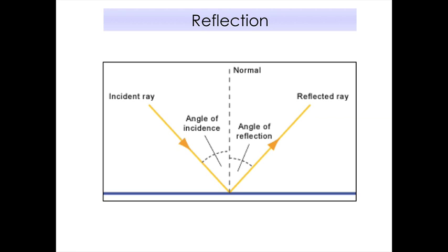When drawing a ray diagram, there are different component parts you need to know. The first is called the normal, which is drawn in dotted lines and is always perpendicular — at a right angle of 90 degrees — to the surface. Second, the light coming in is called the incident ray. The light going out is called the reflected ray. Incident means coming in; reflected means going out.